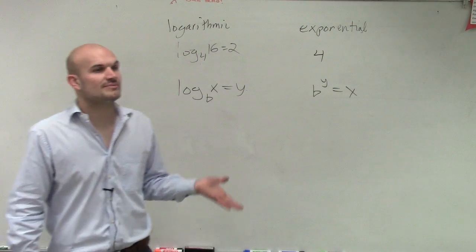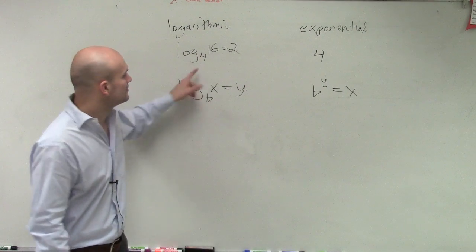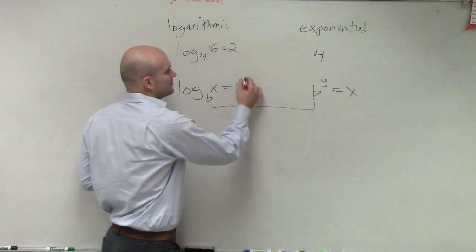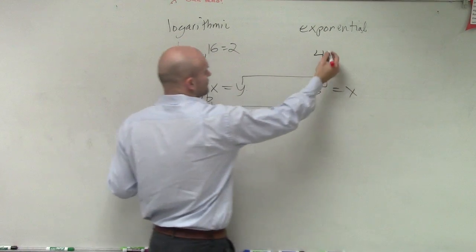So the base of your logarithm is the same as the base of your exponent. Then, you guys are just going to pretty much follow the pattern. So what it equals is now your exponent. So, 4 squared.